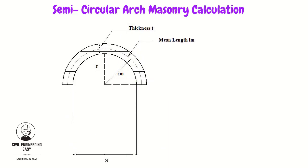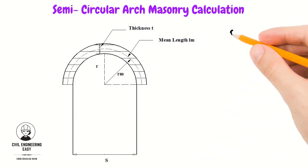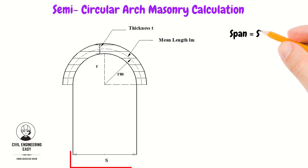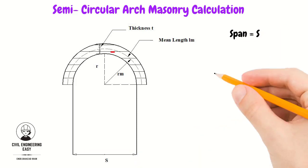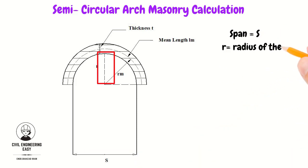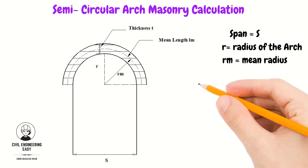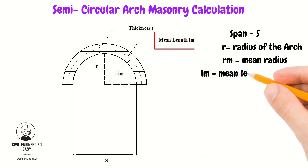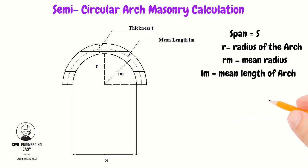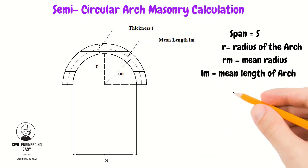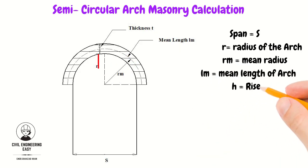Consider a semicircular arch having a span represented by S. R is the radius of the arch, Rm is the mean radius, Lm is the mean length of the arch, and H is equal to rise.